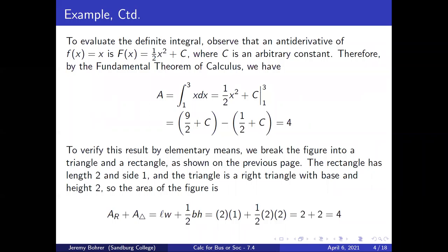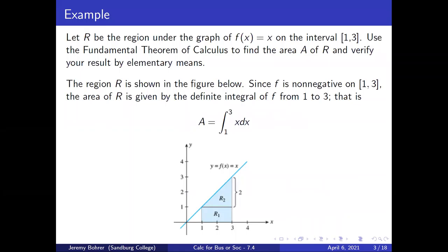To evaluate the definite integral, observe that an antiderivative of f(x) = x is F(x) = (1/2)x² + c, where c is an arbitrary constant. Therefore, by the fundamental theorem of calculus, A equals the integral from one to three of x dx, which is (1/2)x² + c evaluated between one and three, which is (9/2 + c) minus (1/2 + c), which is four.